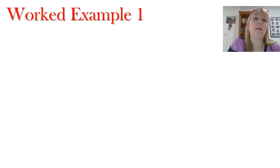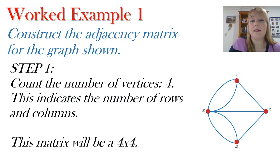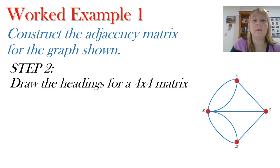So I'm going to take you through a couple of little worked examples. In worked example one we need to construct an adjacency matrix for the graph shown. Now step one is I'm going to count how many vertices I have. A, B, C and D gives me four vertices. So that means I'm going to need four rows and four columns. It's going to be a four by four matrix.